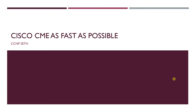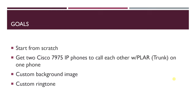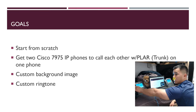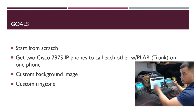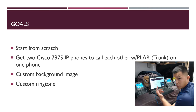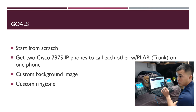Welcome everybody. Today I'm going to be configuring Call Manager Express from scratch as fast as possible. I'm your host ECB Seth. The goals are to configure two 7975 IP phones that can call each other, configure a Private Line Automatic Ring Down (trunk line) so one phone auto-dials the other on pickup, set a custom background image on each phone, and add a custom ringtone.